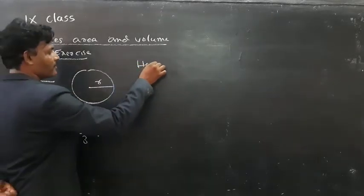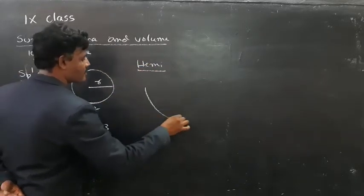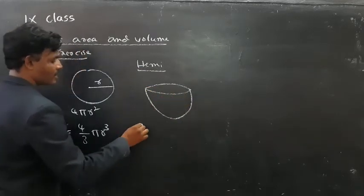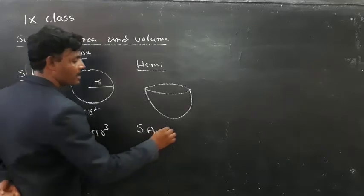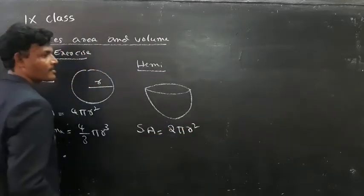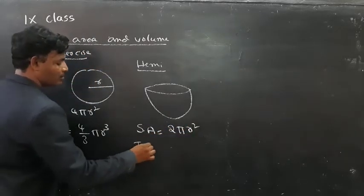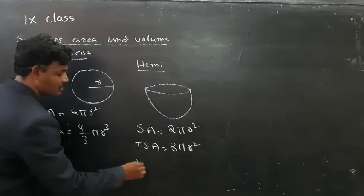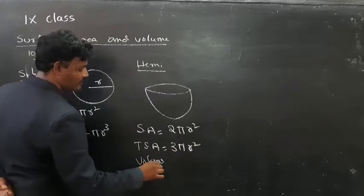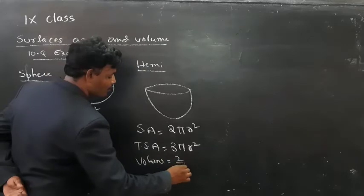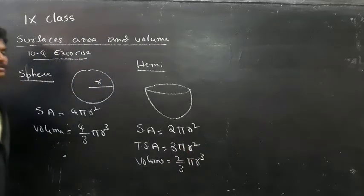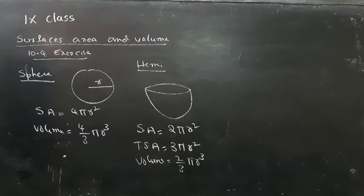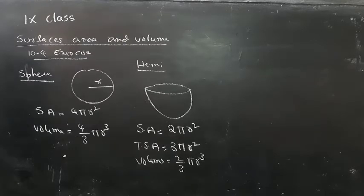Next is the hemisphere. The surface area of the hemisphere is 2πr², and the total surface area of the hemisphere is 3πr². The volume of the hemisphere is (2/3)πr³. So the three formulas for a hemisphere are: surface area = 2πr², total surface area = 3πr², and volume = (2/3)πr³.